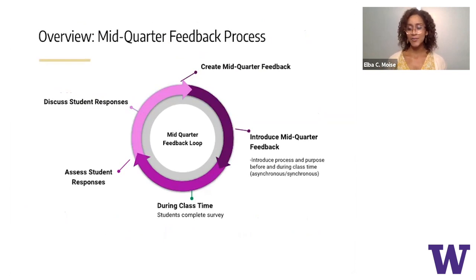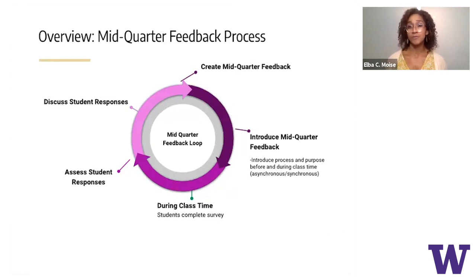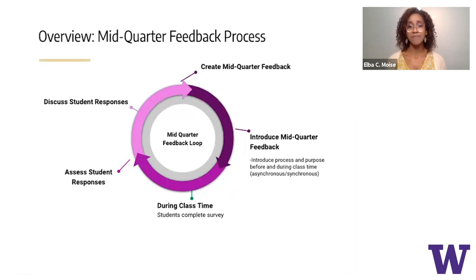The next step is creating time and space during class time, whether that's asynchronous or synchronous, for students to complete their survey. Afterwards, you can assess the feedback and responses, noting themes, and determining what changes you'll make and which you won't and why. And to close the loop, you discuss the responses and feedback with students during the next class session. If the class is asynchronous, you could do that via a short Canvas video recording or Canvas announcement.